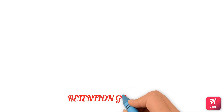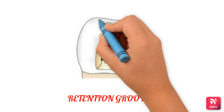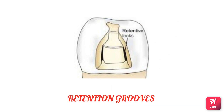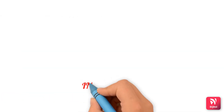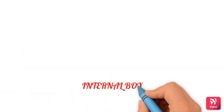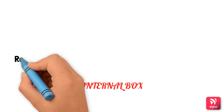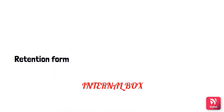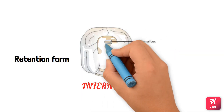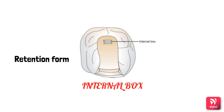Retention grooves: axial proximal grooves are required when wall dimensions are less. An internal box provides additional retention and resistance form and is indicated in shallow cavities or short teeth when there is an occlusal dovetail which cannot be prepared due to a wide defect. It is prepared on the pulpal floor just adjacent to the uninvolved marginal ridge.